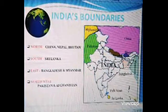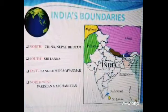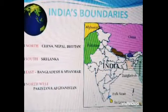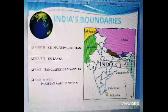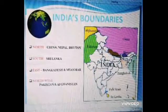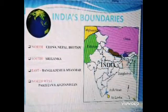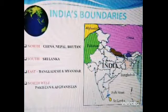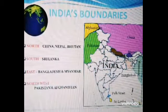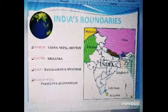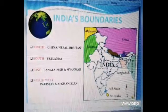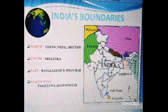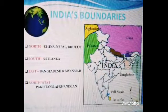Man-made boundaries: West — India and Pakistan border. East — India and Bangladesh. Neighboring countries of India: North — China, Nepal and Bhutan. South — Sri Lanka and Maldives. East — Bangladesh and Myanmar. West — Pakistan and Northwest — Afghanistan.